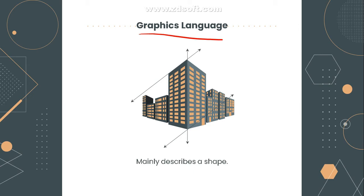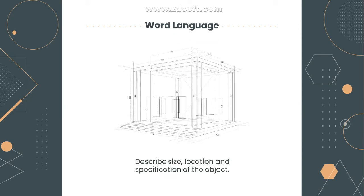All the lines are also part of the graphics language. The second element of engineering drawing is known as the word language. The word language describes size, location, and specification of the object. All the dimensions, all the text, all the letterings that can be found in an engineering drawing is part of the word language.